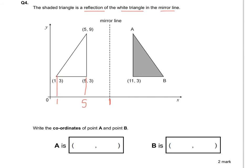Now I've got to work out the coordinates for A and B. One coordinate for each is really easy. If I draw a line across and join up with the y-axis, I can see that's 9 on the y-axis, so the y-coordinate for letter A is going to be 9. Same principle with B — if I draw a line across, the y-coordinate there is 3, and the y-coordinate there is 3, so the y-coordinate for part B has to be 3.